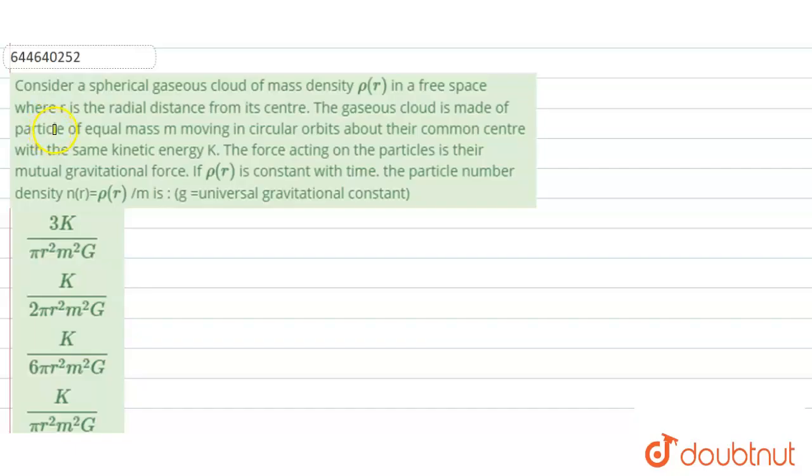Hello everyone, let us try to solve the given problem. So the given problem states, consider a spherical gaseous cloud of mass density rho(r) in free space, where r is the radial distance from its center. We have a gaseous cloud and its mass density rho(r) is a function of distance from the center.